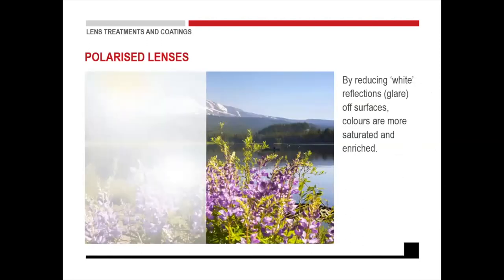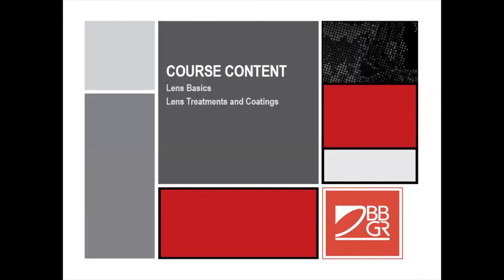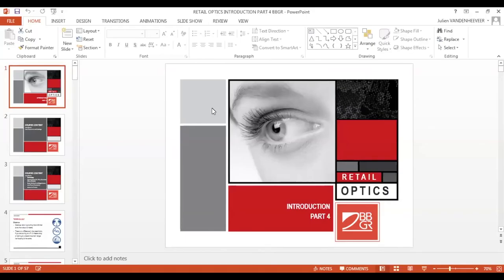This is an example of someone struggling with glare on the left — if you take away the glare, you can see the detail on the right-hand side. Polarized lenses normally only come in gray, green or brown — they don't come in other colors. And that covers everything from my side today in module four.